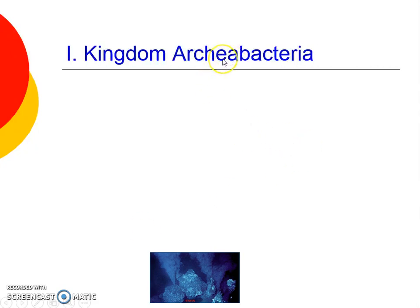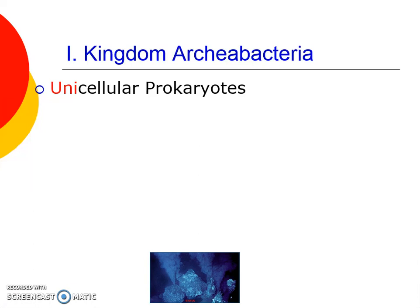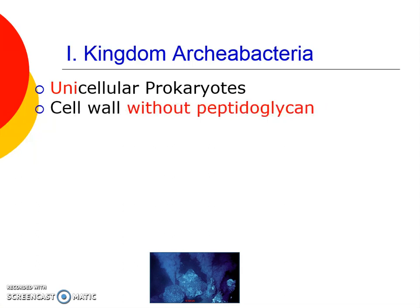Archaebacteria is hard to spell, so don't worry about it as long as you get kind of close. Let's talk about what almost everything in that kingdom has in common. They're all unicellular, meaning one cell, and they're all prokaryotes, meaning no nucleus. They have a cell wall, but the interesting thing is they're missing a type of protein-sugar combination molecule called peptidoglycan, which indicates that it's this type of bacteria because it has a cell wall but doesn't have this molecule in it.